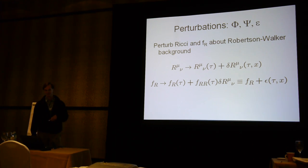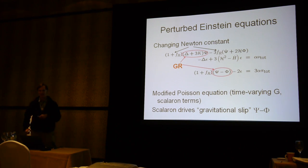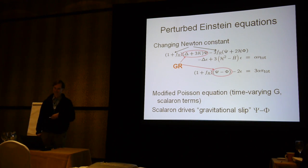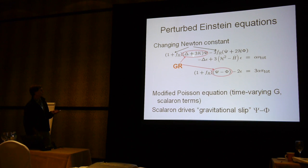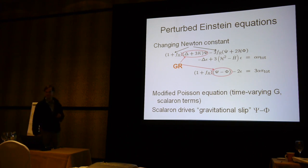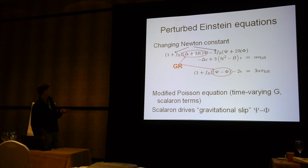Now the cosmological perturbation calculation: we plug into the Einstein equations, and the result is a big mess. I won't put all the equations up, but I want to show a couple with characteristic features. First, in GR I have the Poisson equation for the curvature potential ψ. In f(R) theories this gets modified in two ways. One is that effectively the Newton constant has changed — by a factor of (1 + f_R). This f_R may vary with time and space, so it is a time- and space-dependent redefinition of the Newton constant.